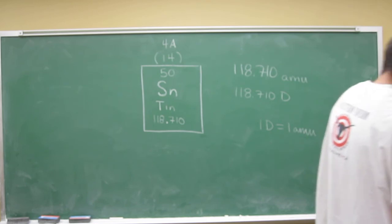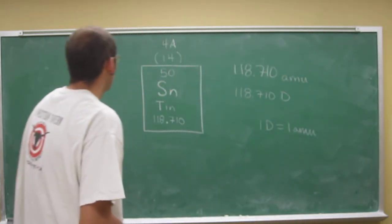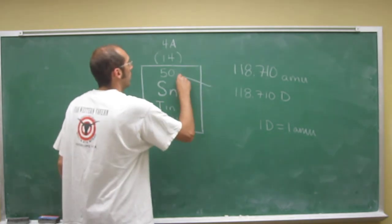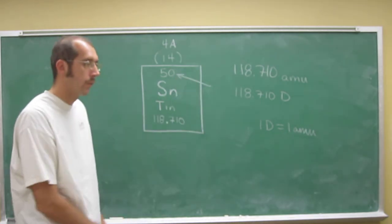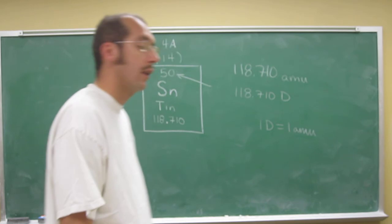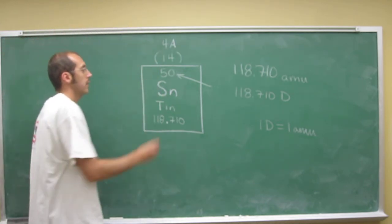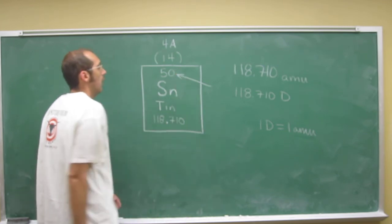How many protons does tin contain? It's the same as the atomic number, so the number of protons is 50. How many electrons does it contain? It contains the same number of protons as electrons, so 50.